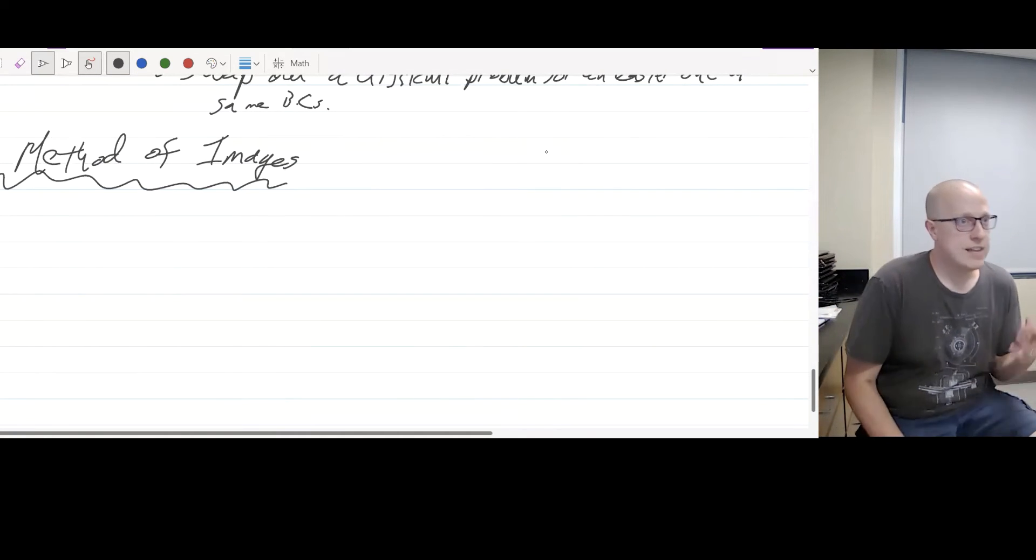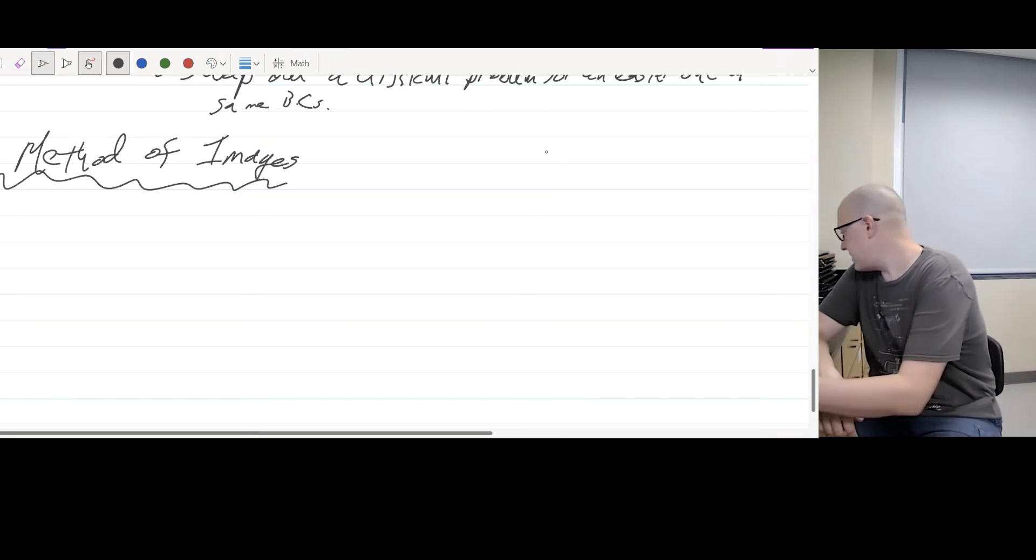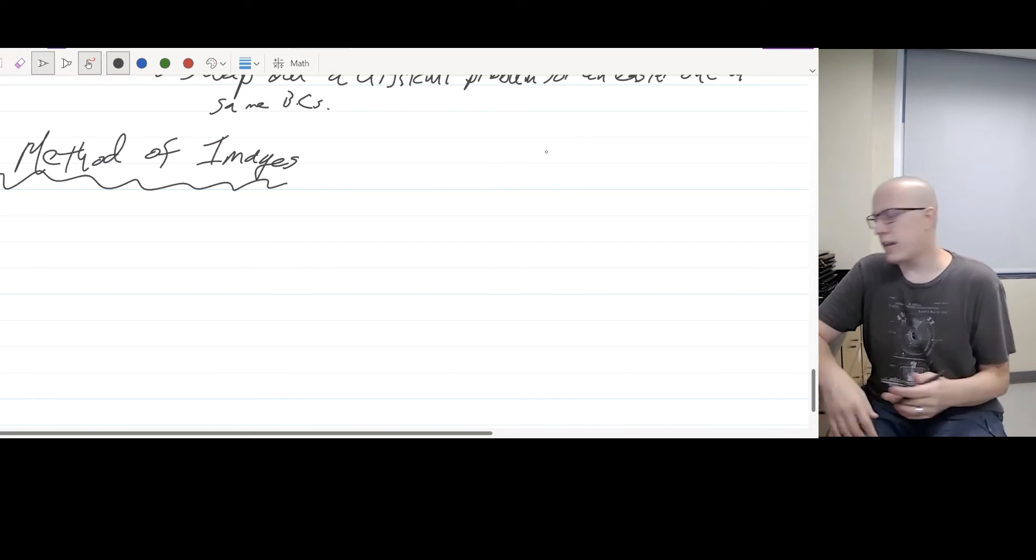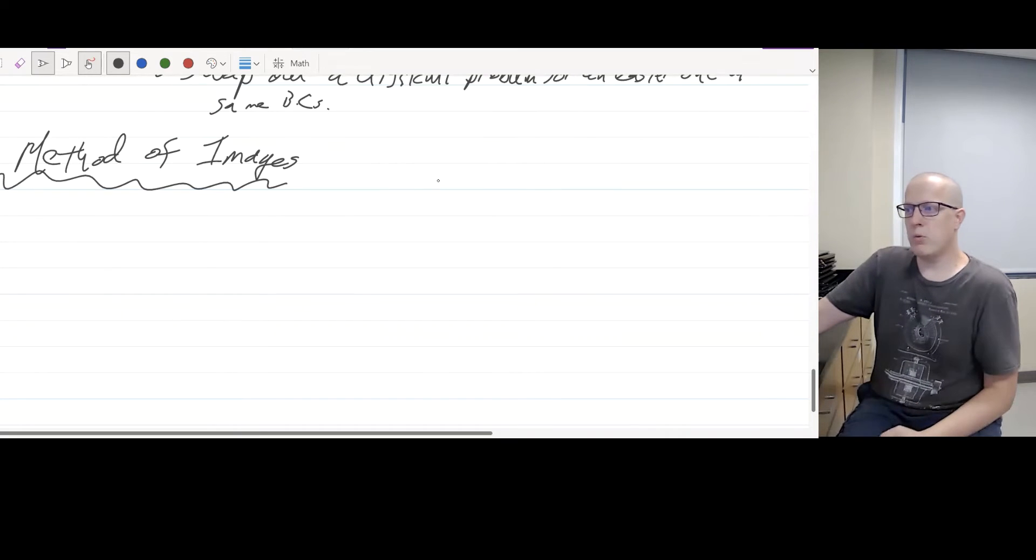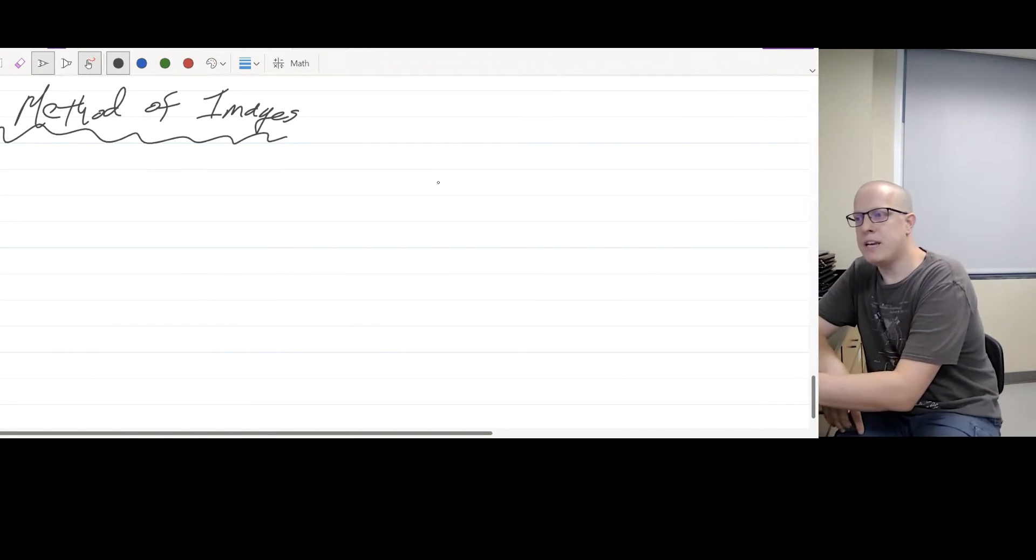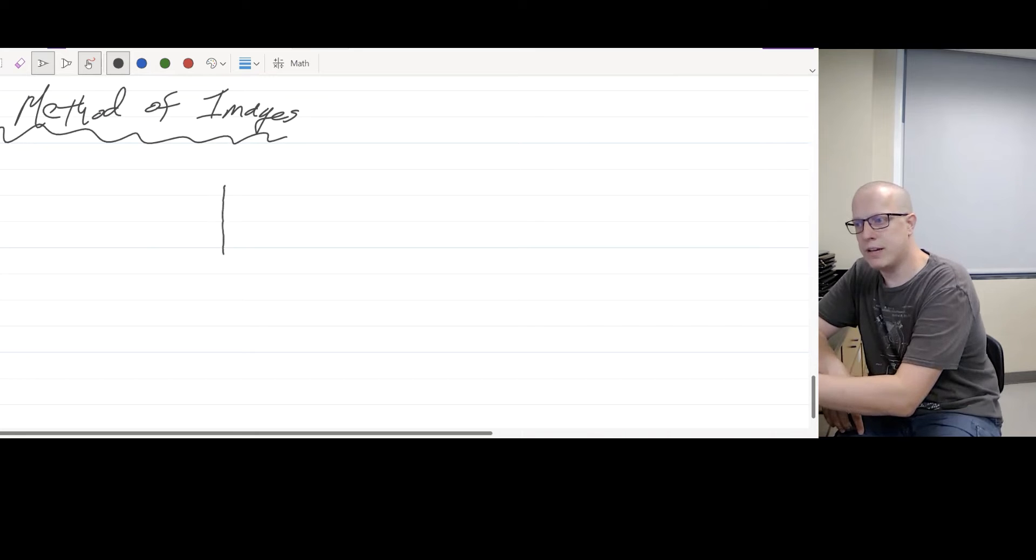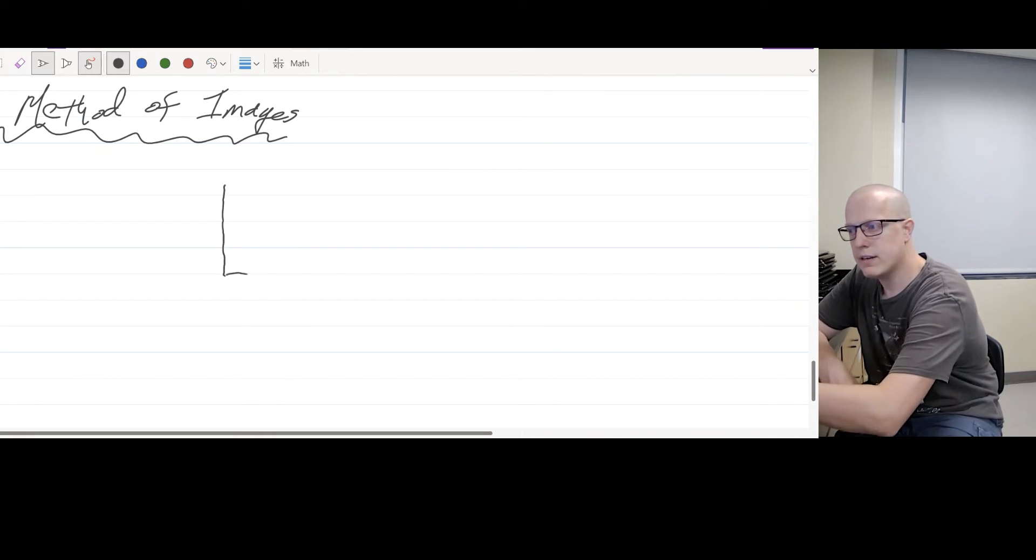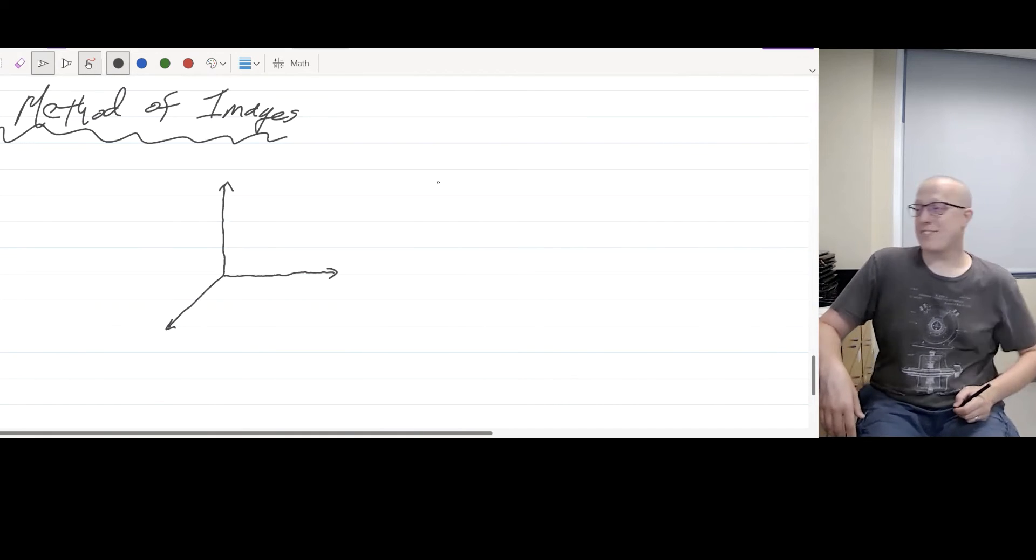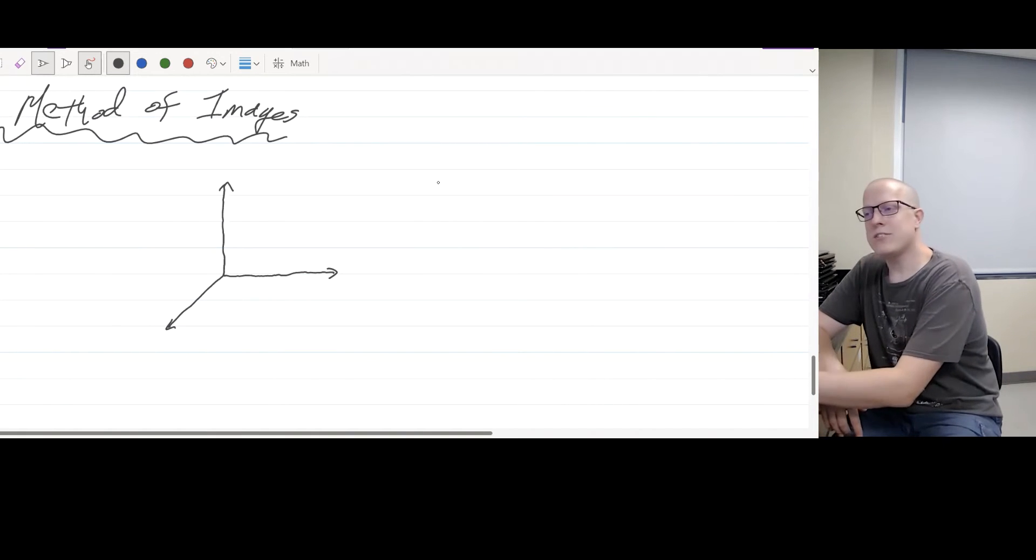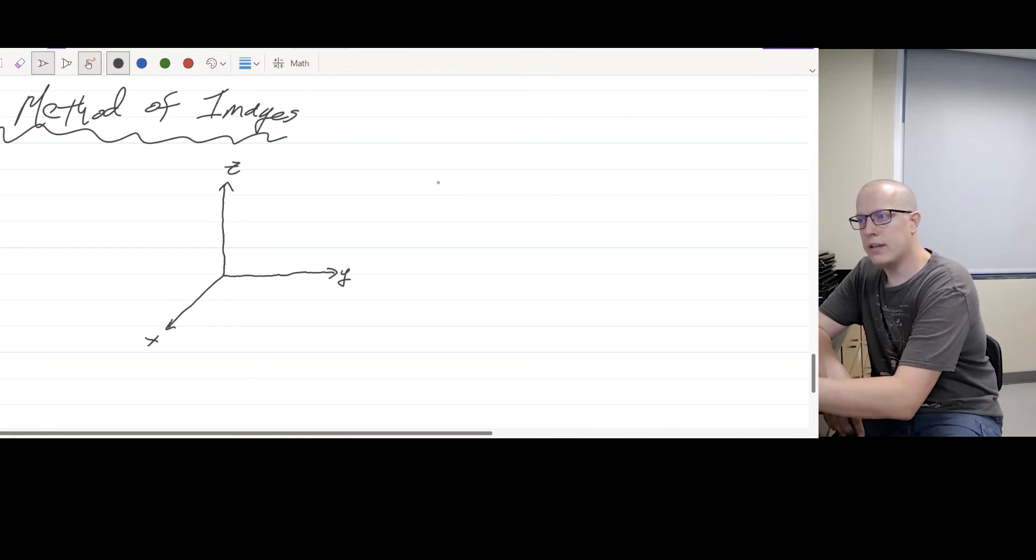And the method of images is taking advantage of this idea. And the best way to do it is just to kind of look at an example here. So I'm going to give you a problem where you might be asked to find the potential. So let's say I have some axes here. Let's say I got X, Y, and Z.